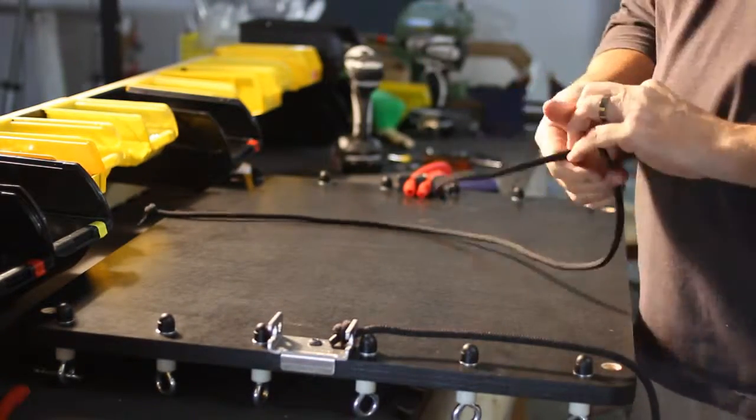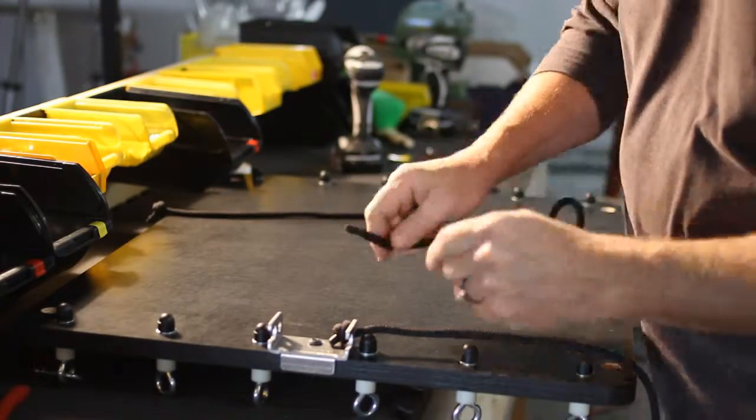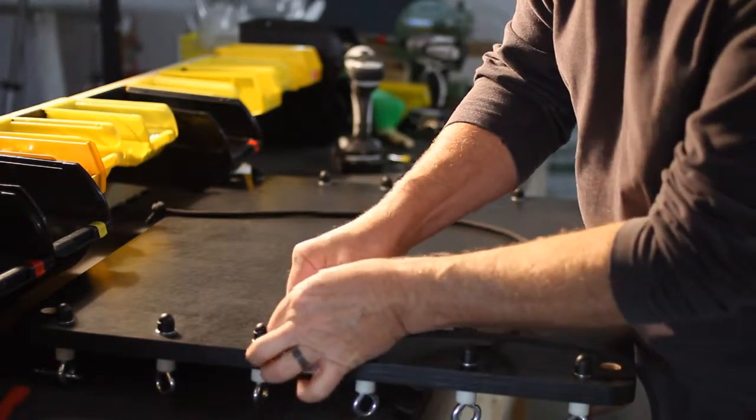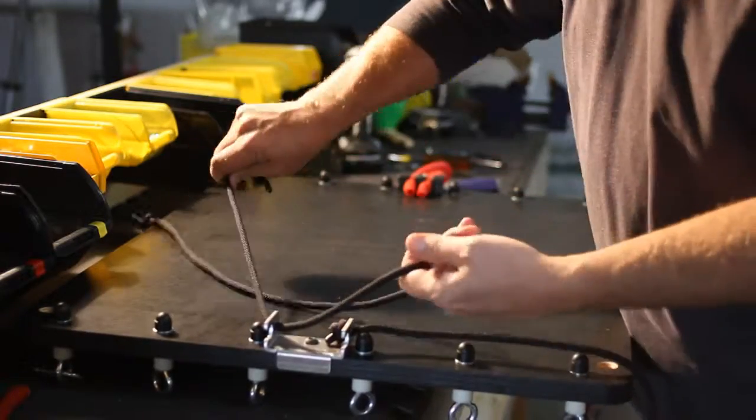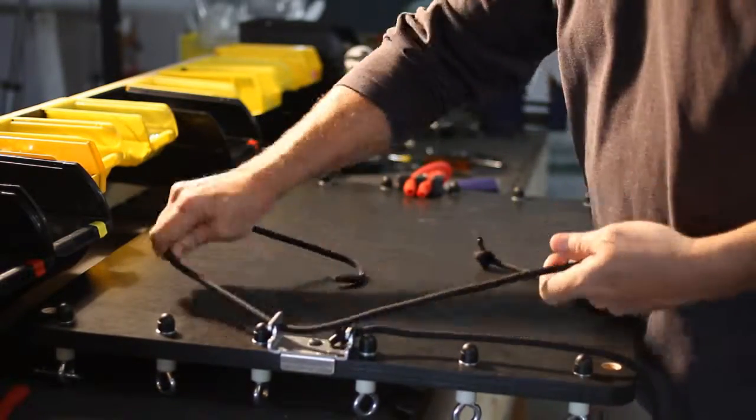I'm showing why I applied the arrester rope first because when I go back to do this, it becomes a little bit difficult to feed this through. It can be done, but it's just a little bit easier to do it before you attach the bracket onto the board.